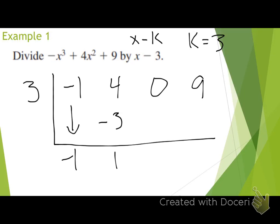Now I'm going to do the same thing with that 1 — multiply it by my k value. What's 1 times 3? 3. That 3 goes below 0. What do I do with 0 and 3? Add them — 0 plus 3 is 3. Then 3 times 3 is 9. What's 9 plus 9? 18.